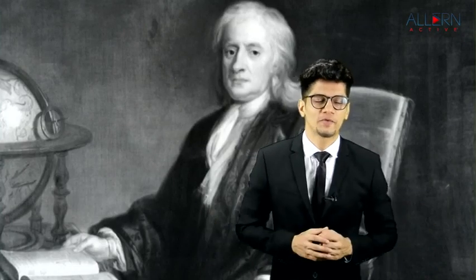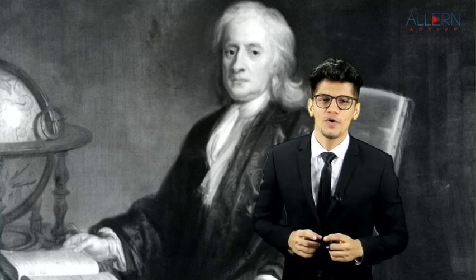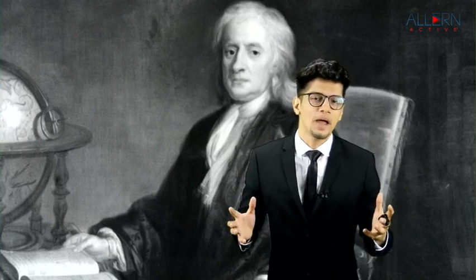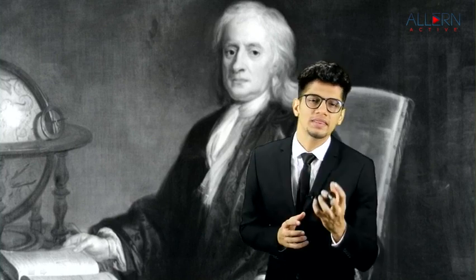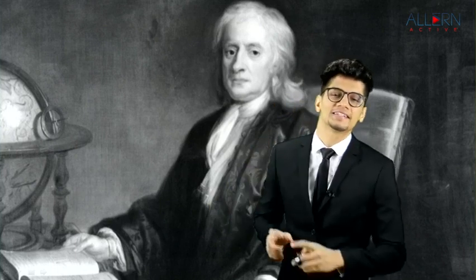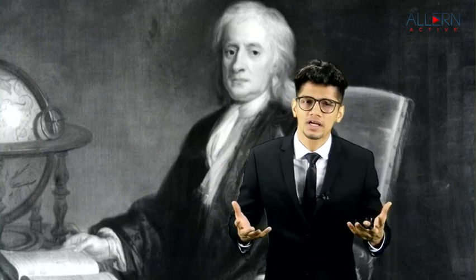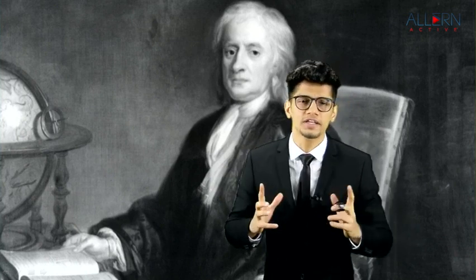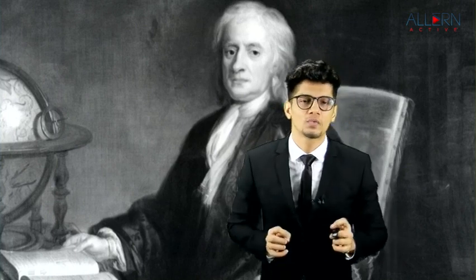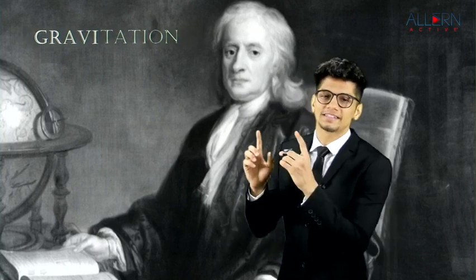What would happen if I throw a ball in the upward direction? After some time, that ball will start coming in the downward direction. This happens because there is an invisible force pulling the object downward. The idea of that invisible force came from Sir Isaac Newton. When he was sitting under an apple tree, the apple fell on his head and he started to think why the apple fell downward. He concluded that there is an invisible force pulling objects downward, and he named it the gravitational force.